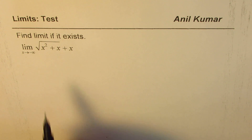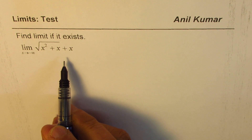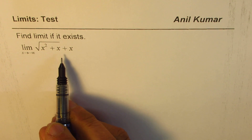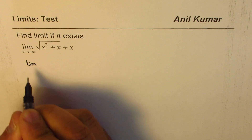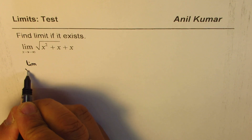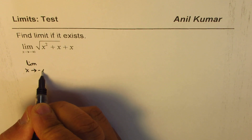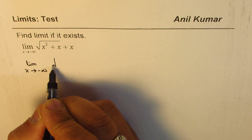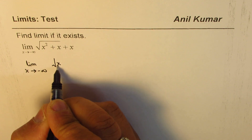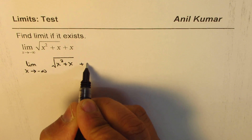What should be the strategy to solve such a question? You should rationalize this. So let's rationalize and find the limit. The limit when x approaches minus infinity, the function is square root of x squared plus x, plus x.